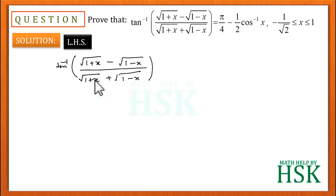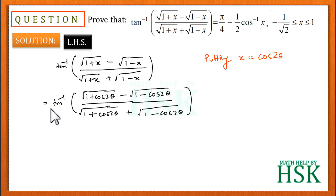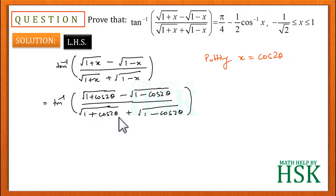To solve this, I'm going to substitute x equal to cos 2 theta. This substitution will simplify the expression. On placing x equal to cos 2 theta, I get tan inverse of square root of 1 plus cos 2 theta minus square root of 1 minus cos 2 theta, whole upon square root of 1 plus cos 2 theta plus square root of 1 minus cos 2 theta.